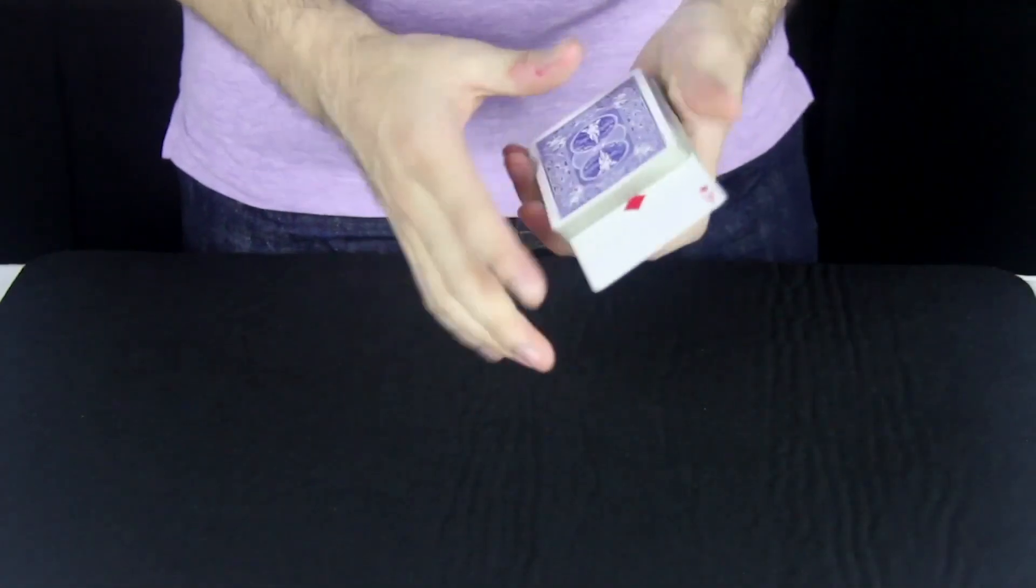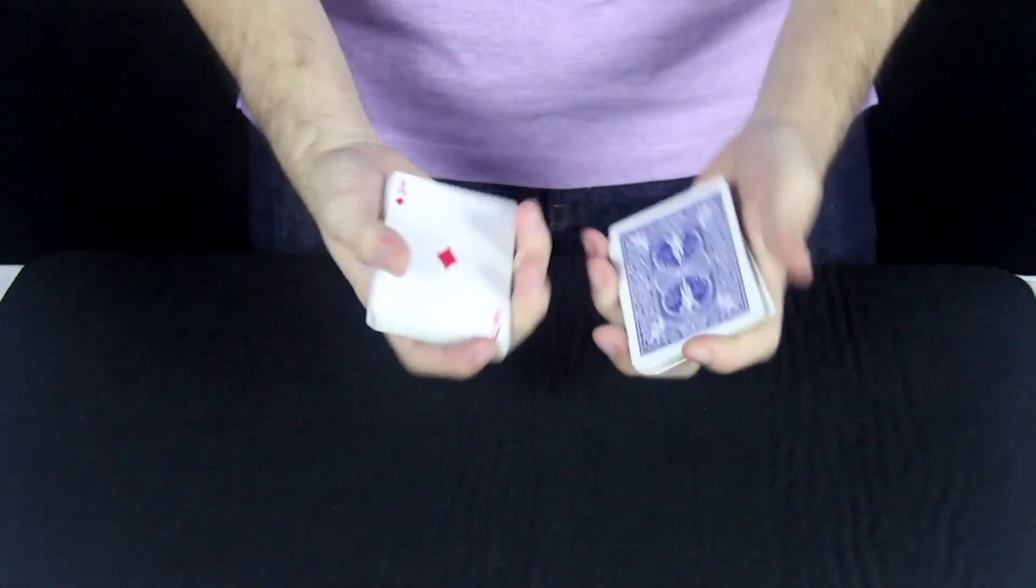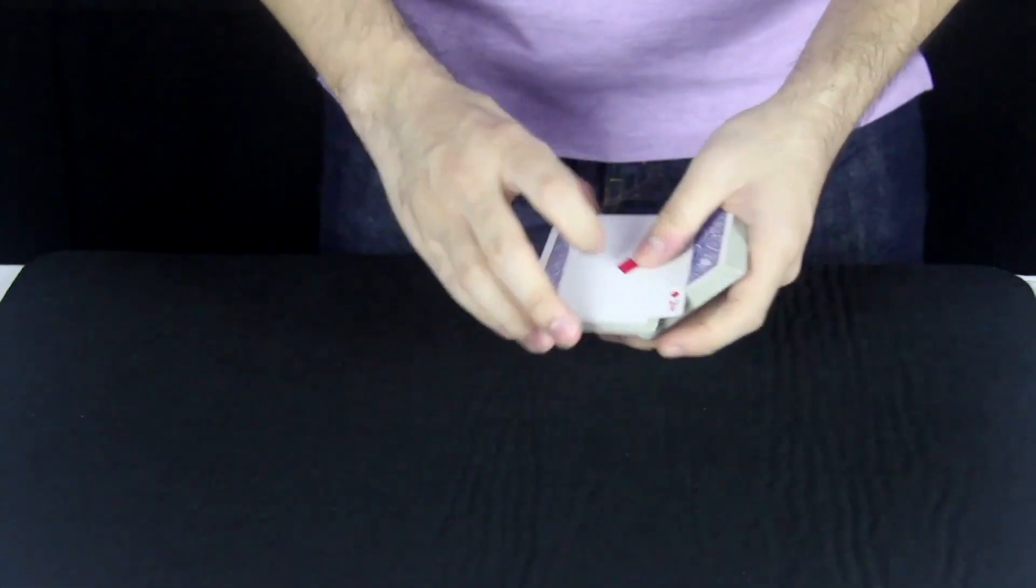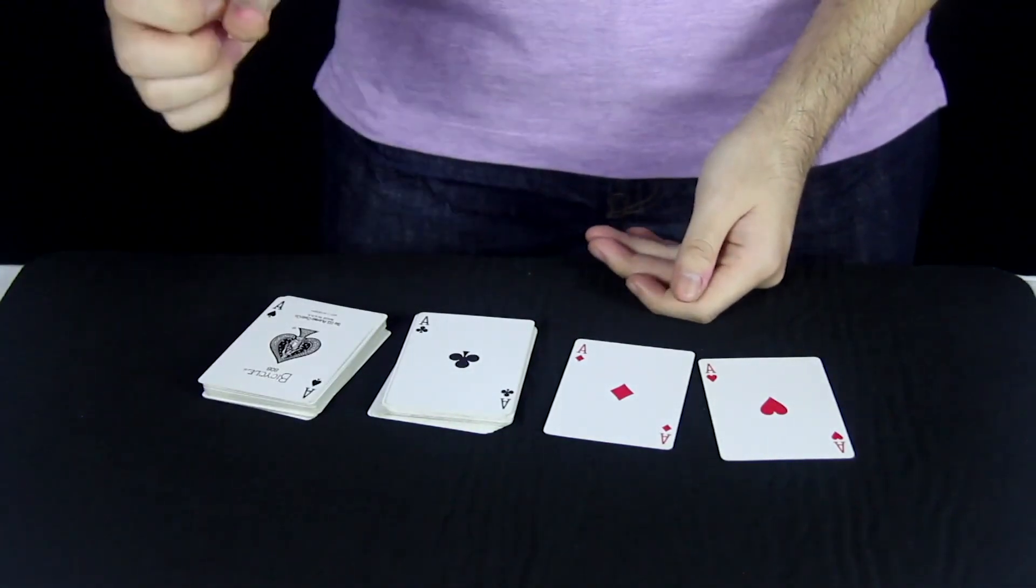Right there. Alright. So you think the aces might be somewhere around here. Let's see if you're correct. That's one, that's two, that's three, that's all four aces.